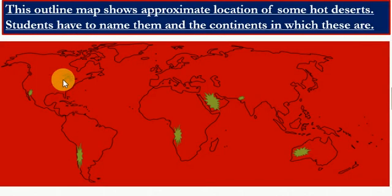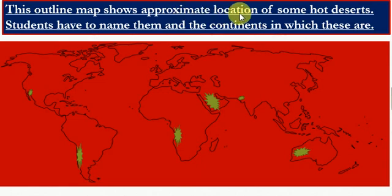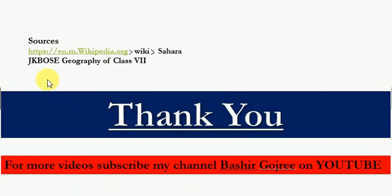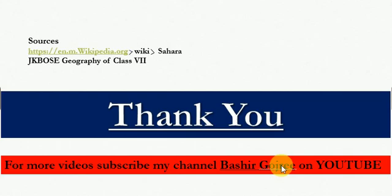This is all for class 7th students. At the end, here is a map for students. This outline map shows the approximate location of some hot deserts. Students have to name them and the continents in which these are. The sources used for this topic are Wikipedia and the JK Bose Geography textbook of class 7th. Thank you for watching this presentation. For more videos, subscribe to my channel Bashir Gojri on YouTube.